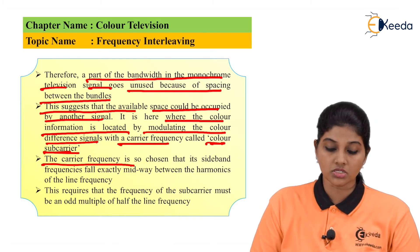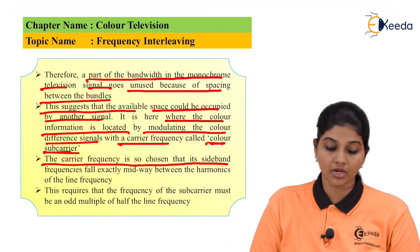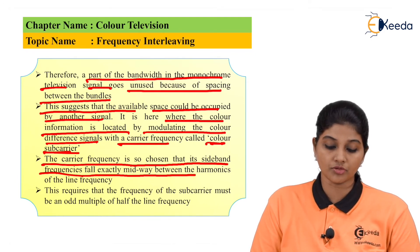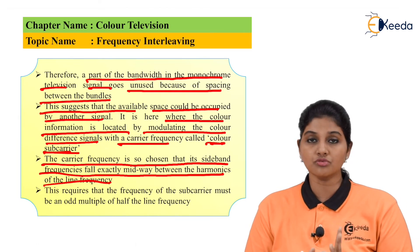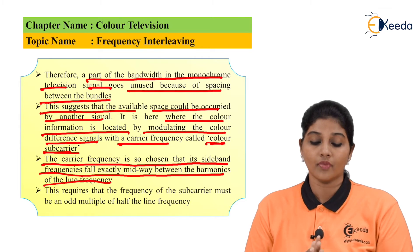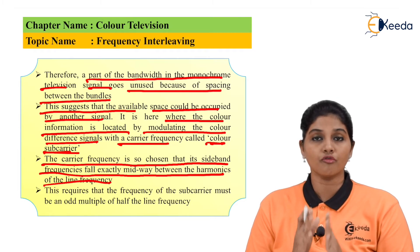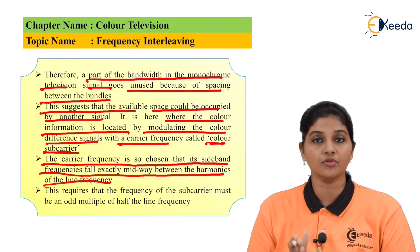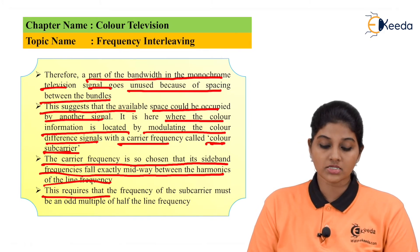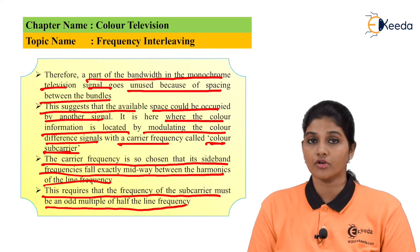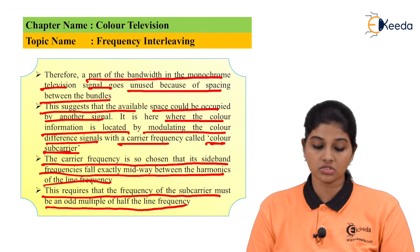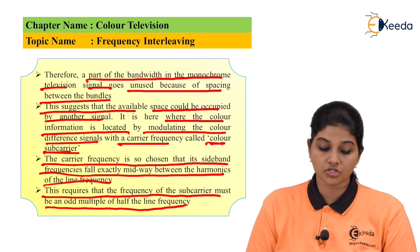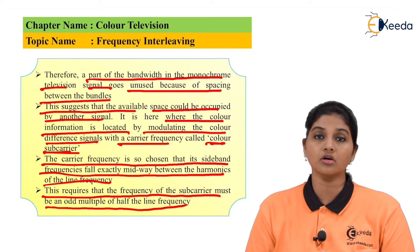The carrier frequency is selected such that its sideband frequencies fall exactly midway between the harmonics of the line frequency. This requires that the frequency of the subcarrier must be an odd multiple of half the line frequency. For example, if the line frequency is 15.625 kHz, the subcarrier is selected at half or an odd multiple of that value.